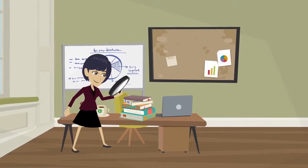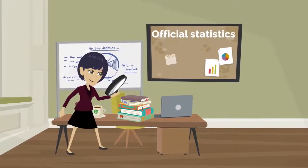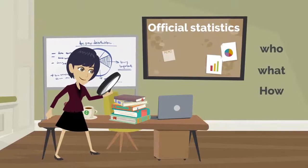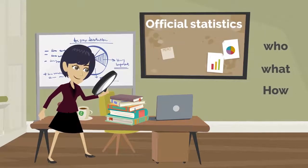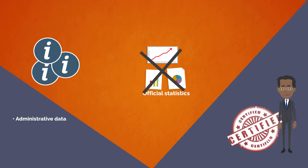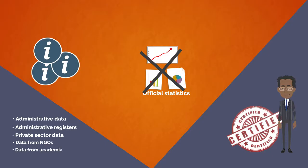Fiona was happy to find out where she could obtain official statistics. After finding out what are not official statistics, it is clear for Fiona who, what, and how statistics should be produced to be recognised as official. Any information that was not produced originally and specifically for statistical purposes by a designated producer of official statistics specified in the legislation cannot be considered official statistics. This includes, but is not limited to, administrative data, administrative registers, private sector data, data from NGOs, and data from academia. Note: these secondary sources can be used for the production of official statistics by designated producers of official statistics.